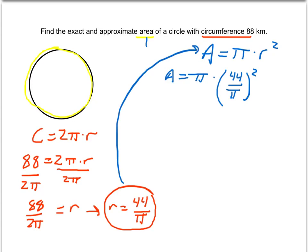And of course that simplifies to π times... Whenever we have a fraction squared, we have the top part, the numerator squared, divided by the denominator squared.